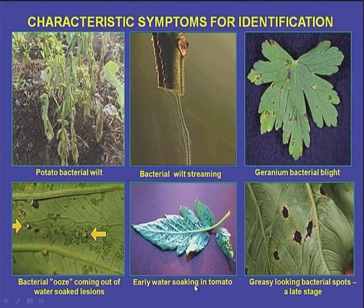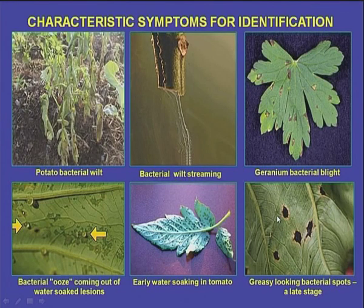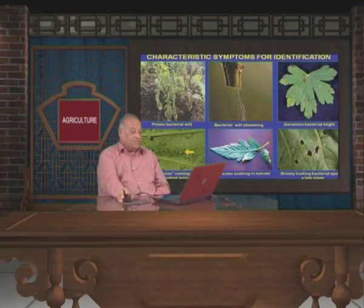Here is the early water soaking in tomato — you can see water-soaked spots on tomato leaves as the early symptom. This is the later symptom, and in most types of bacterial infections we find greasy-looking bacterial spots having dark black to brownish spots with a yellow halo around them. This is the late stage of bacterial infection — if this type of symptom is observed in an affected plant, we can confirm it as late-stage bacterial infection.